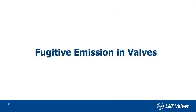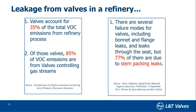Some statistics found by studies: in a refinery, valves account for 35% of the total VOC emissions. Of this value, 85% of the emissions come from valves controlling gases. So gases are the major contributor. Any valve has several modes of failure — there could be a body-bonnet joint which can leak to the atmosphere, or there could be gland packing through which a valve can leak.